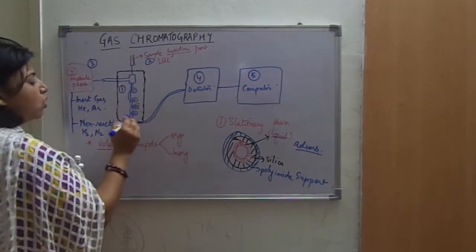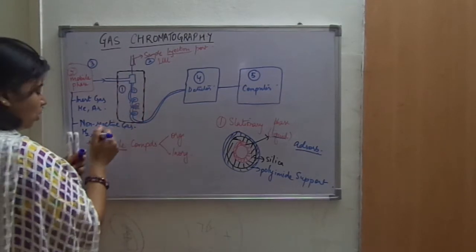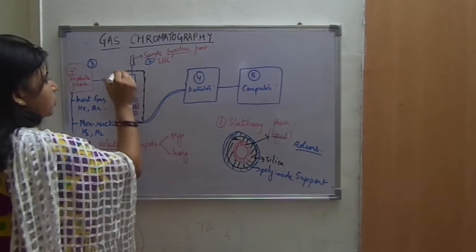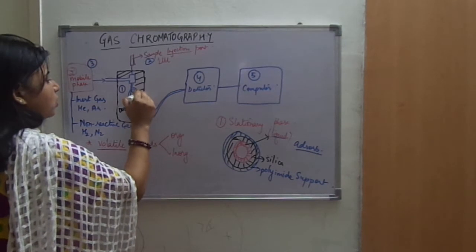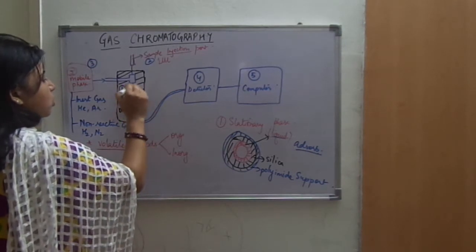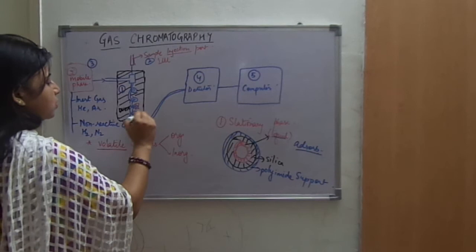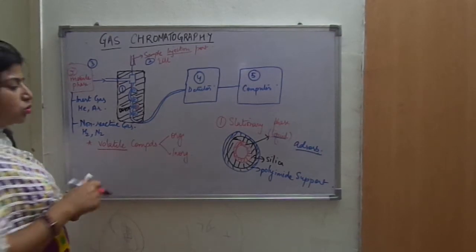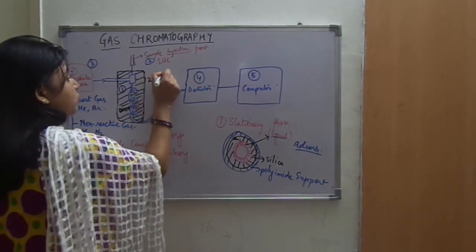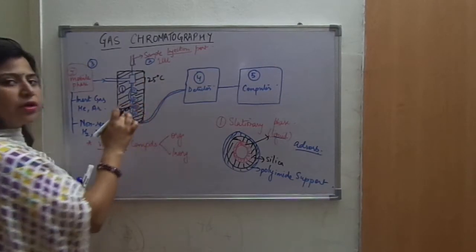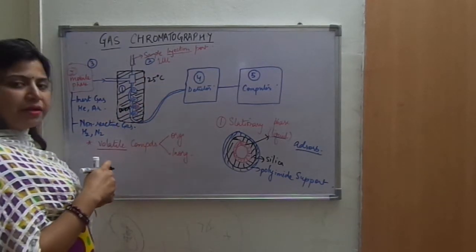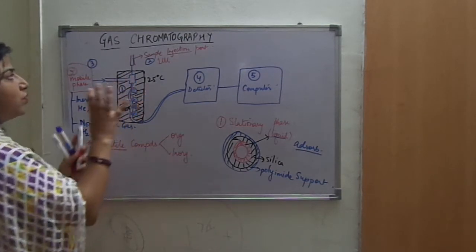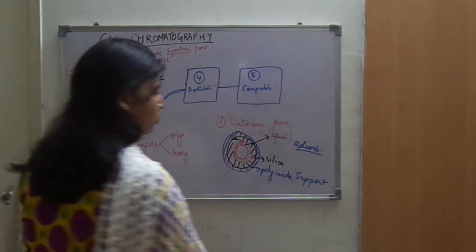A special part of gas chromatography is the column, which is kept inside an oven. The oven can change the temperature of the column. So if you have started chromatography at 25 degrees Celsius, you can end at 25 degrees Celsius, or you can increase and decrease the chromatographic separation temperature accordingly. We will take an example and understand the technique of gas chromatography further.